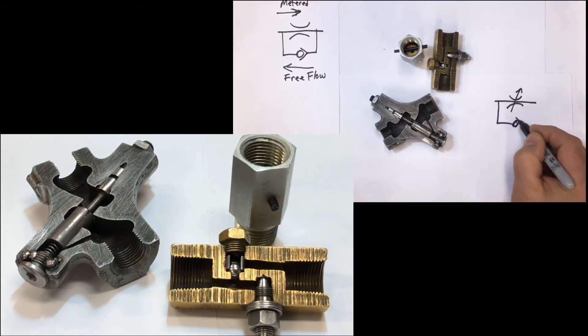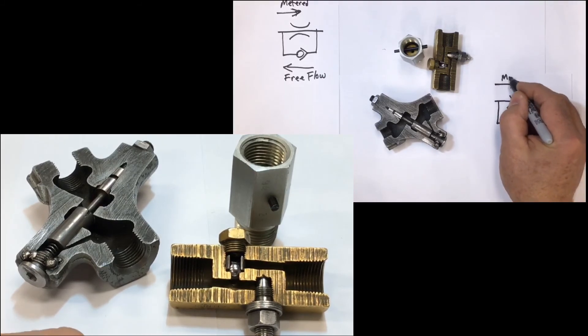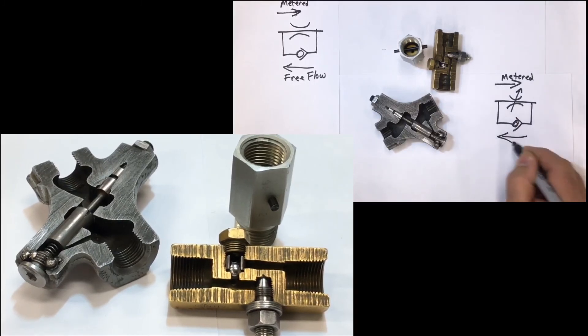Other than that, we still draw the check ball around it, and so what we've got here now is the fact that, again, in one direction it's metered, so in this direction right here, it's metered flow, and in this direction, we're showing that it's free flow.